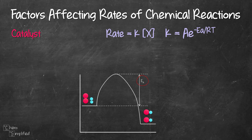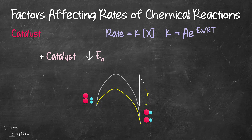Now, when we add a catalyst, the activation energy is lowered. That means if we refer to our rate equation, K is going to increase, and as a result our rate will increase as well. Therefore, when we add a catalyst, it's going to speed up the reaction.